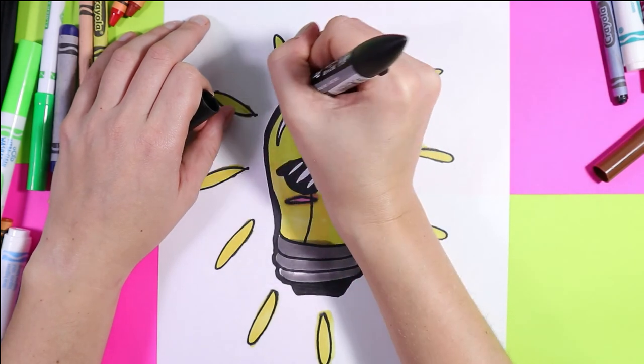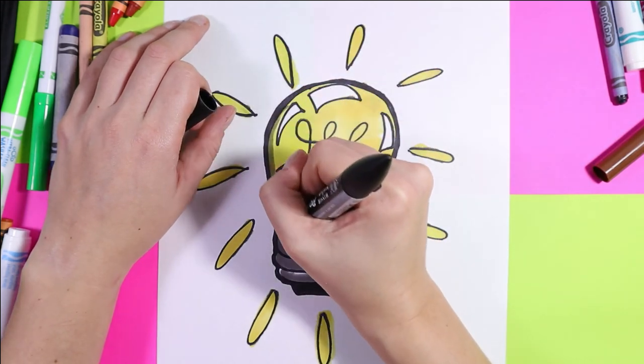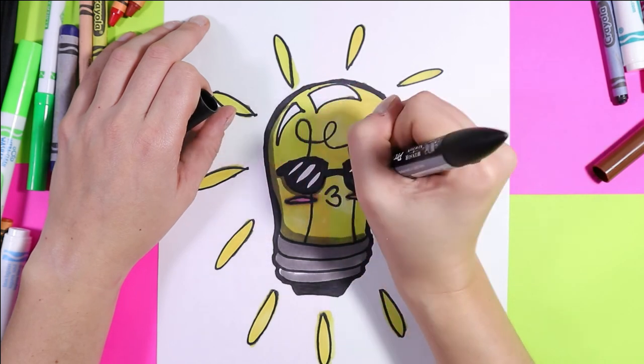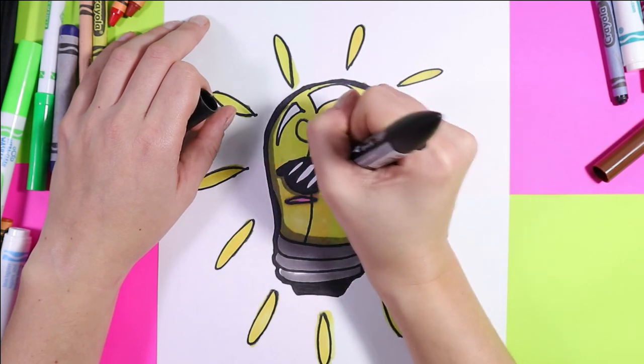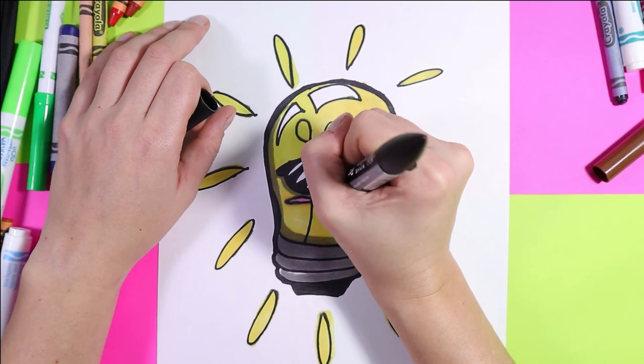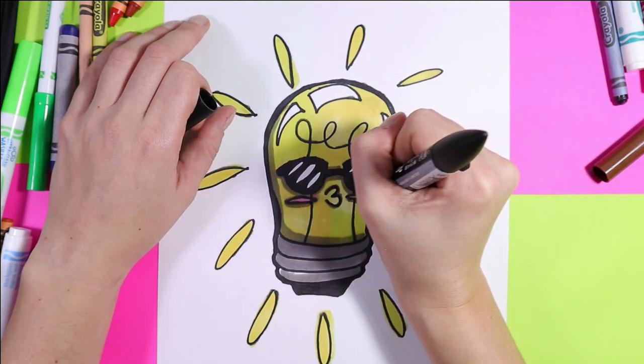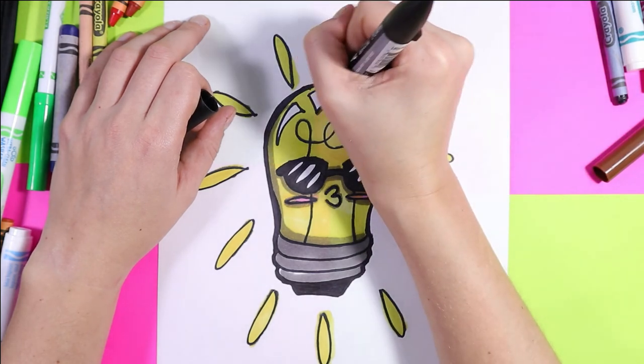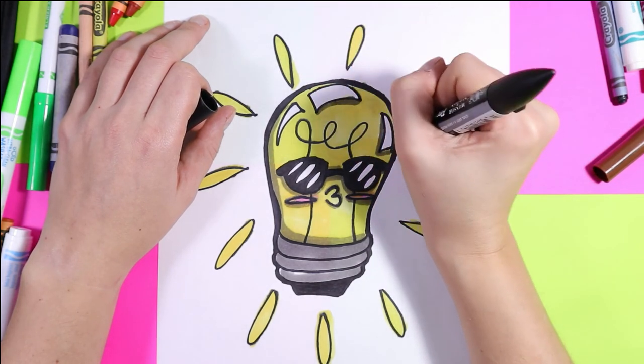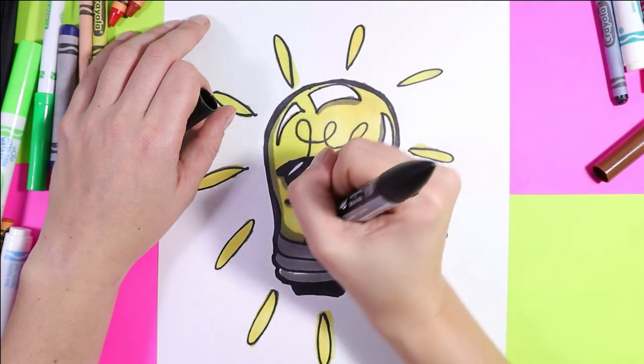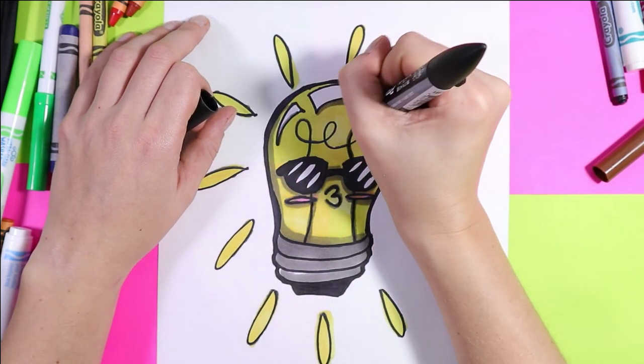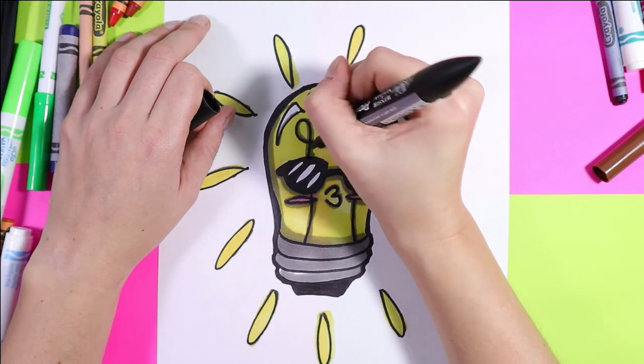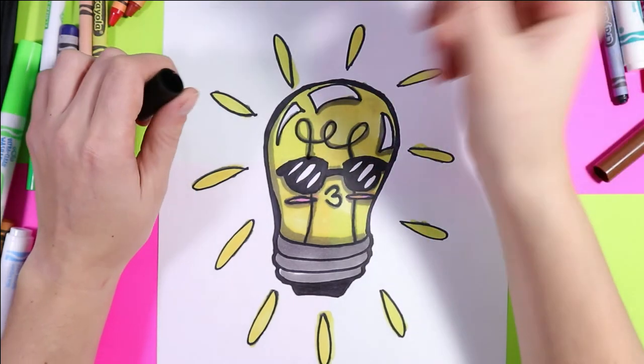Perfect! You can also use your gray to add just a little bit of shading on your light bulb if you want. You can go around the glasses and around the mouth and under those cheeks. You can also take it and just trace over those filament lines that way it stands out.